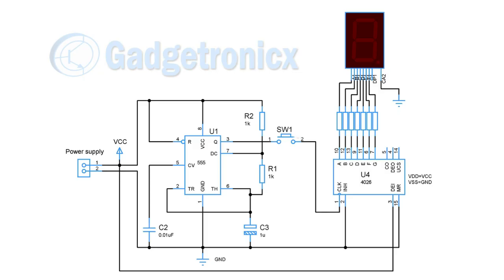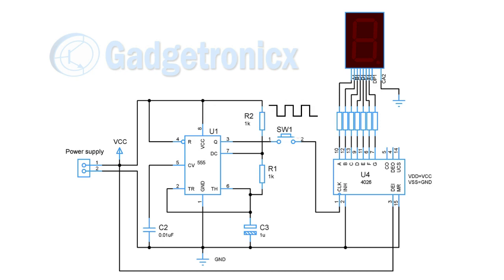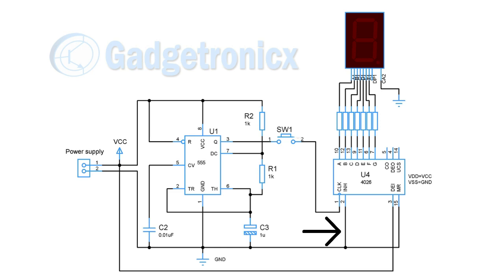Let's take a quick look at the circuit diagram first. The circuit starts with a 555 timer wired as an astable multivibrator. This generates square waves of constant frequency. This square wave is then fed as an input via a push button to the IC4026.